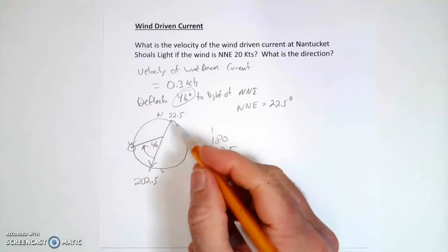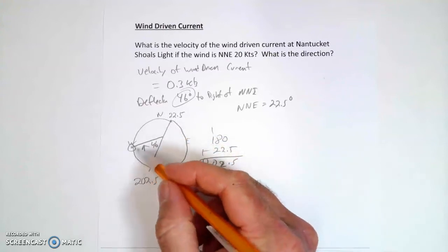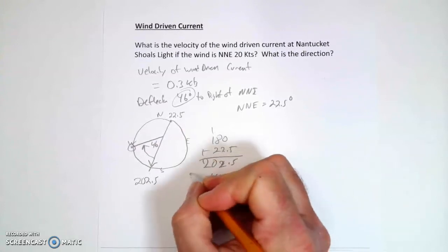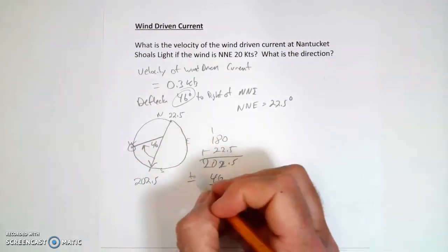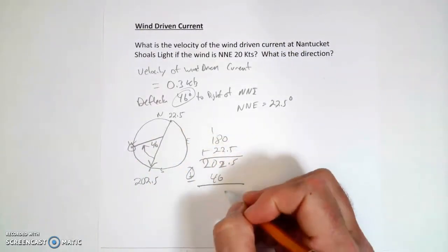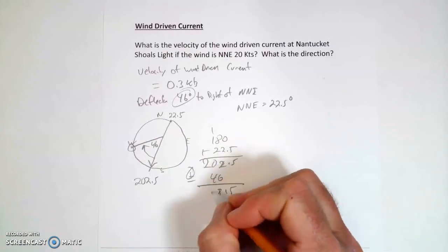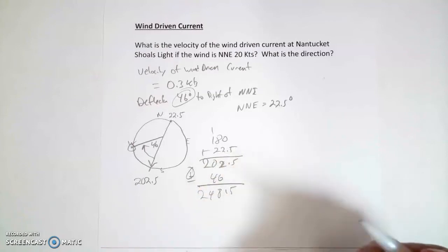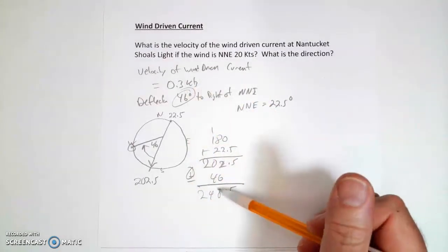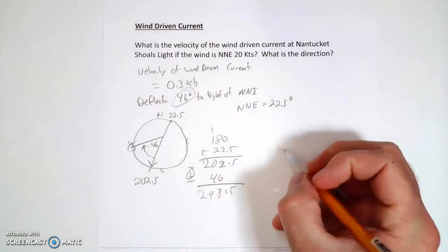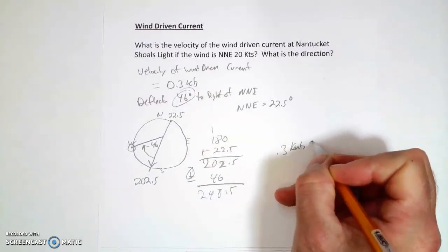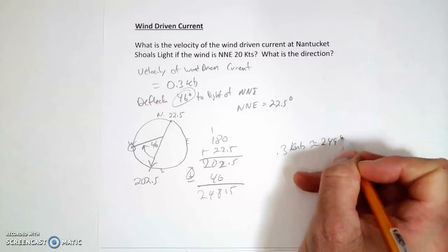202.5 is the direction the wind is blowing towards. And now I'm going to be 46 degrees to the right. So I'm going to have to apply 46. I'm either going to add or subtract. It looks like to me it's getting bigger. So I'm going to add. So that's 0.5, that's 8, 4, 248.5, basically 249. So it's going to be 0.3 knots at about, so the wind-driven current will be 0.3 knots at about 249 degrees.